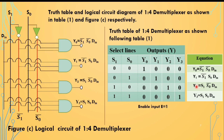From the truth table we derive the output expressions. For y0, since s1 is 0 and s0 is 0, the expression is y0 = s1_bar · s0_bar · din. For y1, with select 0, 1, the expression is y1 = s1_bar · s0 · din. Similarly, for y2 with select 1, 0, the expression is y2 = s1 · s0_bar · din.